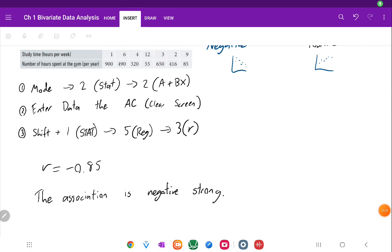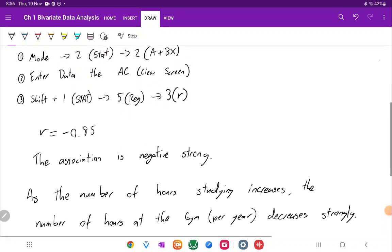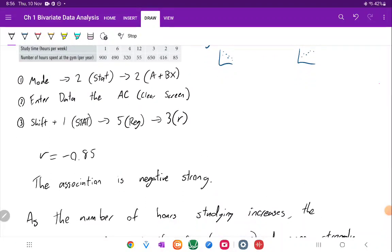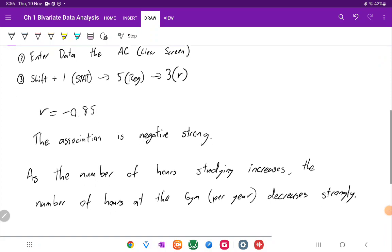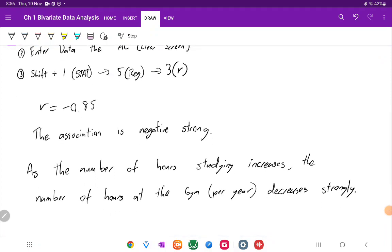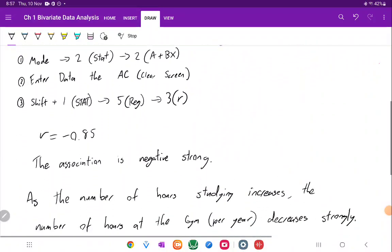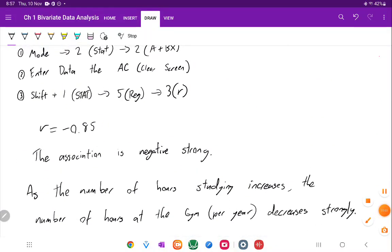Let's try using that in a sentence linking study time and number of hours spent at the gym. So therefore, as the number of hours studying goes up, then the number of hours spent at the gym decreases strongly. And there we go. So there is a quick way of being able to determine association. Notice I can't say whether or not this is linear. The fact that it's negative 0.85 means that it could be linear, but it's not a guarantee. There are many things that look linear. Alright, I'll see you in the next one. Goodbye.